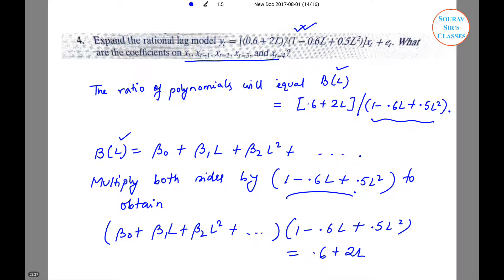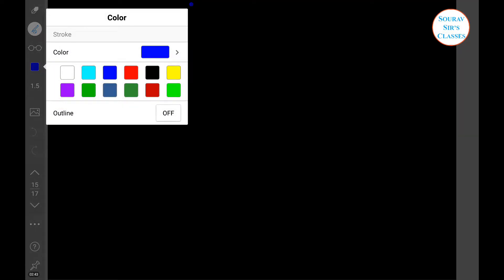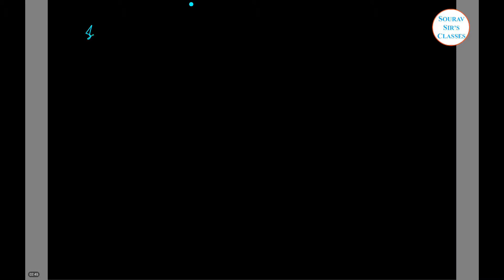Because left hand side on these two equations are equal, the right hand side must be equal. Since the two sides must be equal, it follows that beta 0 is equal to 0.6 because it is the only term dividing of L.